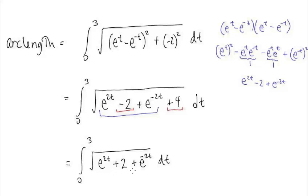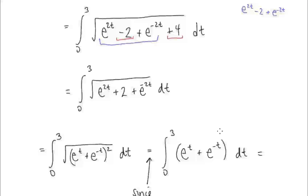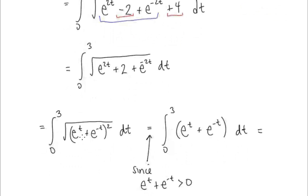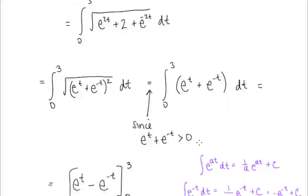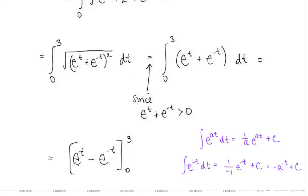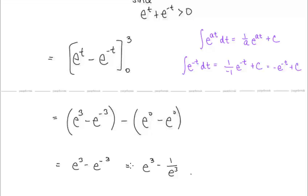Comparing what we have to the original expression, the only difference is the sign of the middle term, suggesting the expression factors as (e to the t plus e to the negative t)². Since e to the t plus e to the negative t is always positive, we cancel the square root with the square, leaving e to the t plus e to the negative t. Integrating gives e to the t minus e to the negative t, evaluated from 0 to 3, giving the arc length.